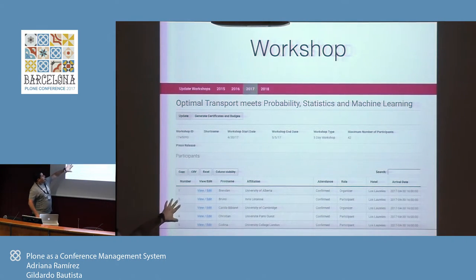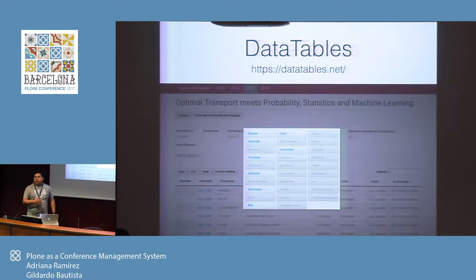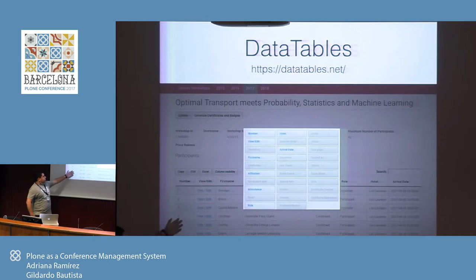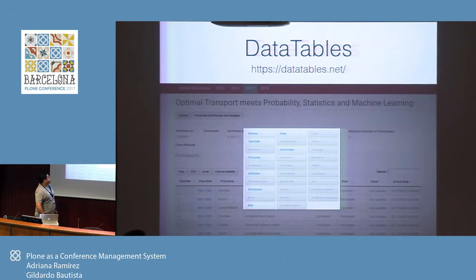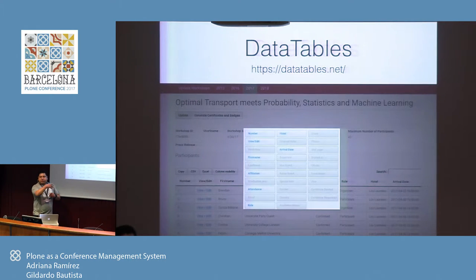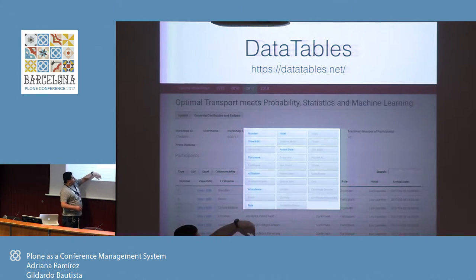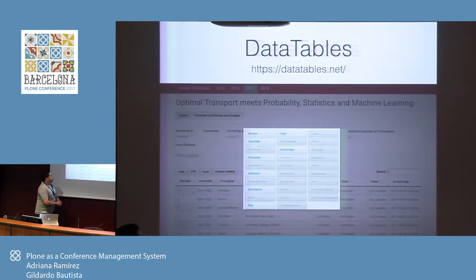Users can edit fields like hotel information or arrival time so staff can pick them up at the airport. For this view we used a JavaScript library called DataTables. It's a very good JavaScript tool for displaying tables — it lets you show or hide columns dynamically. Sometimes they send reports to different places and need specific fields like emails or visa information. This tool was very helpful, and it's also responsive.